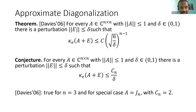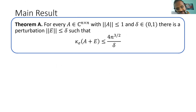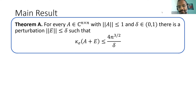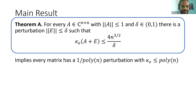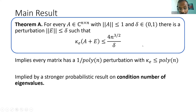The result I want to present is that this conjecture is true. Theorem A states: for every matrix A with norm at most one and every delta, there exists a perturbation E of norm at most delta such that the eigenvector condition number of A+E is at most 4n^(3/2) over delta. This is a slowly growing function of n divided by delta, which improves the previous exponential dependence. In particular for algorithmic applications, if delta is set to one over a polynomial in n, every matrix is close to one whose eigenvector condition number is polynomial in n.